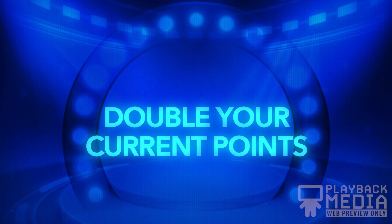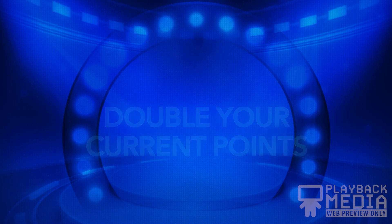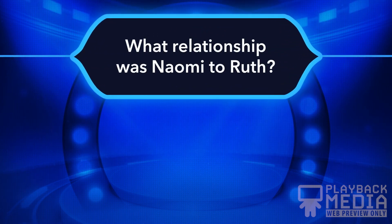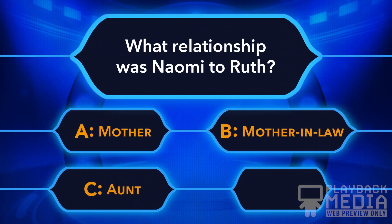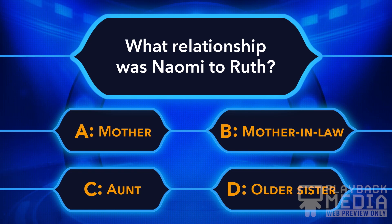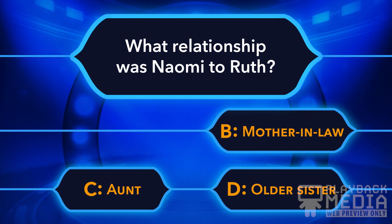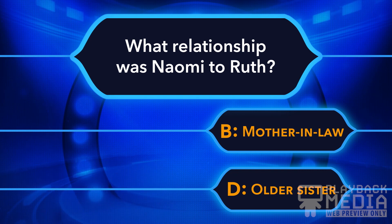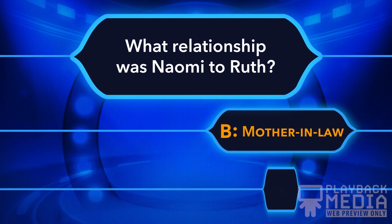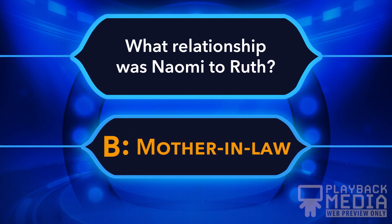And the last question for double your current points. What relationship was Naomi to Ruth? Was she A. a mother, B. mother-in-law, C. an aunt, or D. an older sister? The answer is B. Naomi was a mother-in-law to Ruth.